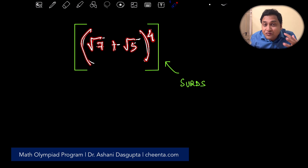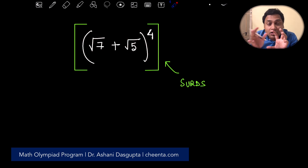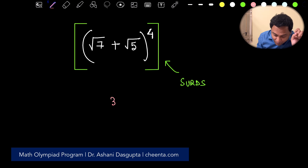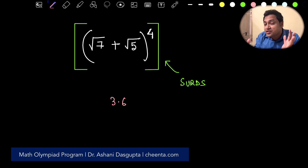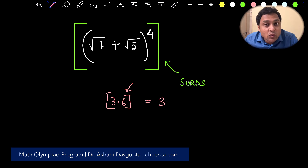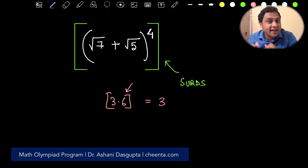We want to find the largest integer that is smaller than this number. For example, if we have a number like 3.6, the largest integer smaller than it is 3. This is usually denoted by square brackets — the floor of this particular number.